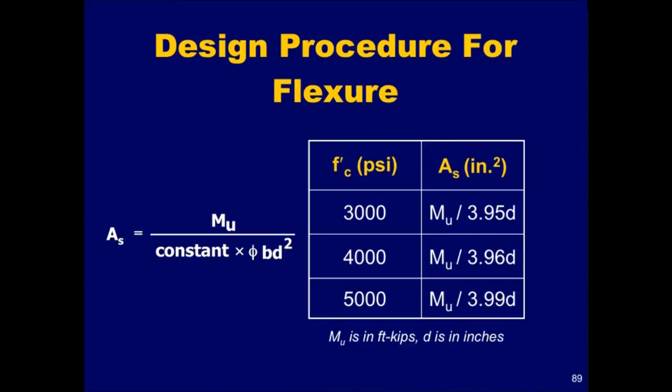This table can be used to determine the required area of reinforcing steel as a function of the concrete compressive strength. It is applicable to sections with grade 60 reinforcing steel. The equations for A sub s were developed by calculating the applicable constant that was derived earlier, and then dividing by 12,000 to convert kip-foot to inch-pounds. It is clear that for concrete compressive strengths that are commonly used in beams and slabs, the required area of steel can be determined by dividing the factored moment by the quantity 4D in all cases.